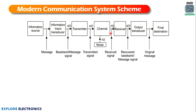The output of the channel is given to the receiver, and the receiver's input is called the received signal. The receiver extracts the baseband signal or message signal — it does exactly the reverse of what the transmitter did. The recovered baseband signal, called the message signal, is in electrical format and is given to the output transducer. The output transducer converts this electrical signal back into the original message, such as audio, which is delivered to the final destination.